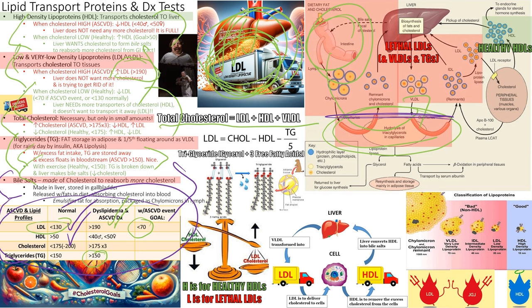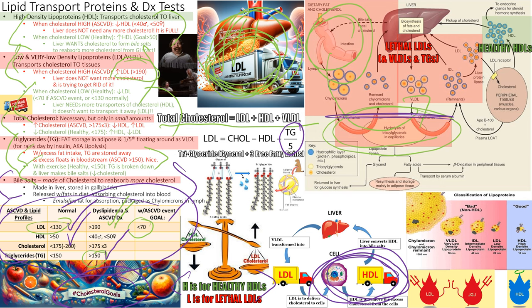Total cholesterol above 175 three times in a row means dyslipidemia, the first step of ASCVD. Triglycerides above 150 are bad. Summary of goals: HDLs — high; LDLs — low. HDLs take cholesterol from tissues back to the liver. When cholesterol is too high, the liver does not upregulate HDL production, so HDL stays low while LDL stays high.